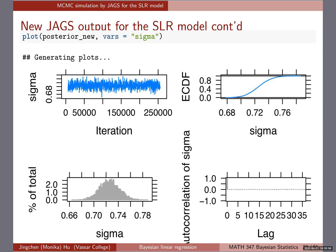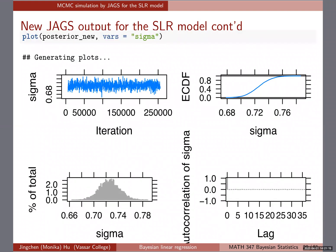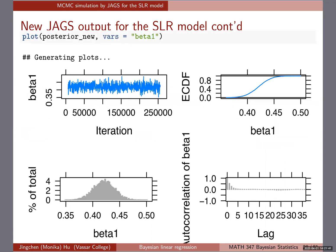From the model output, the mean of beta0 is about 0.3, the mean for beta1 is about 0.42, and sigma is about 0.72. The interpretation mostly involves the intercept and slope, and those numbers come into play. The median for the intercept is about 4.3, meaning that for a consumer unit with log income 0, the expected log expenditure is about $4.3. The 90% posterior credible interval is roughly 3.9 to 4.7.